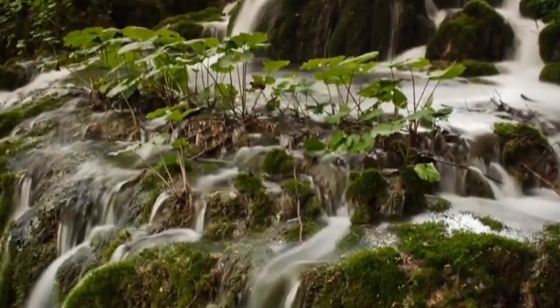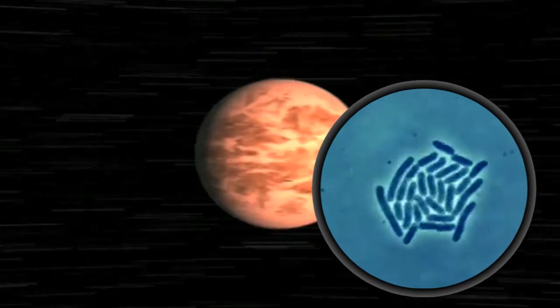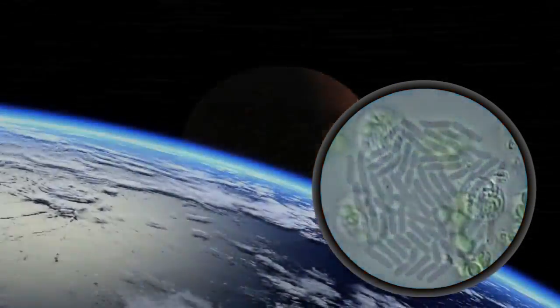This suggests that life may be common, but more complex life may be relatively rare. There may be many planets out there thriving with bacteria or even oceanic worlds covered in algae.